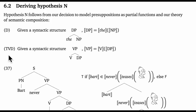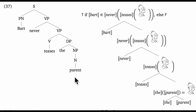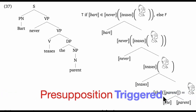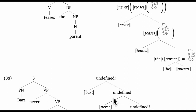Rule TVD just slightly expands rule TV to allow for definite descriptions as direct objects. And with that in place, we can derive simple sentences like 'Bart never teases the parent.' Here you should zoom in on the direct object, 'the parent.' When we applied 'the' to 'parent,' that triggered our presupposition check. In this case, since 'parent' denotes a singleton containing just Homer, everything works out. We get Homer as the denotation, and we can proceed up the tree as though nothing special happened. The presupposition appears to be projecting through the negation, but that's only because it was just a local check inside the direct object.